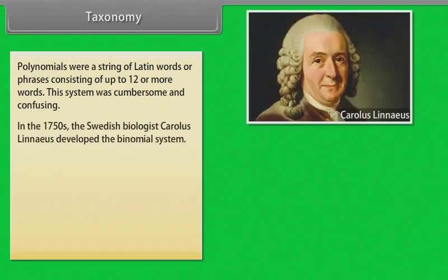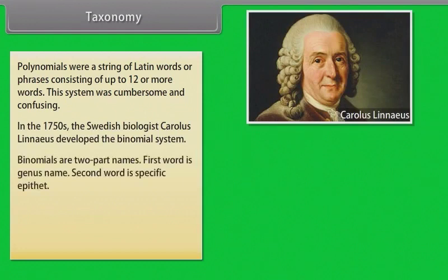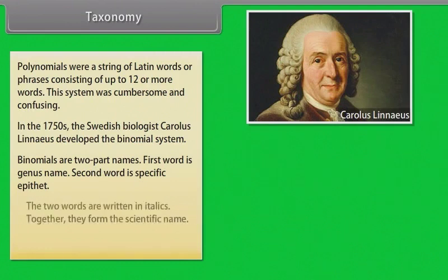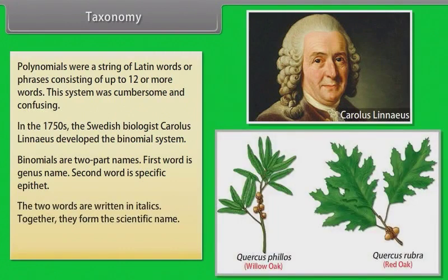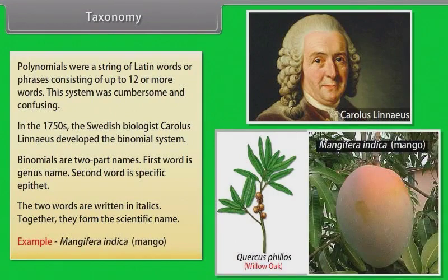Binomials are two-part names. The first word is the genus name and the second word is the specific epithet. The two words are written in italics, and together they form the scientific name. For example, Magnifera indica is the scientific name for mango.